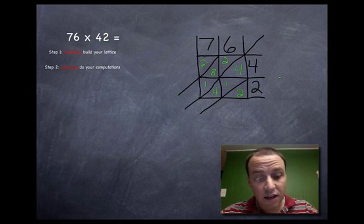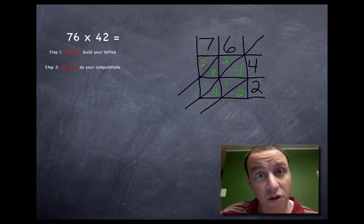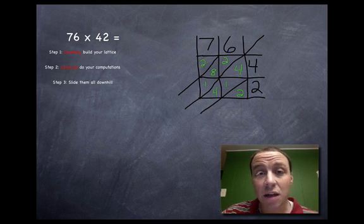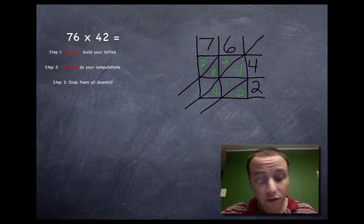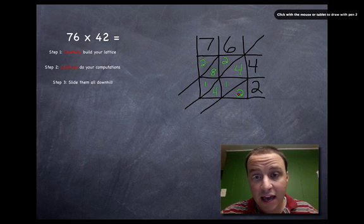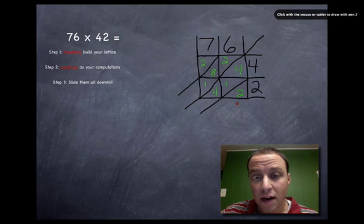Step two is in the books. We only have one more step to go: we slide these numbers downhill. And there's some interesting little nuances to this. Now look, this number here, number two, it's not even on a hill. Nope, it just drops right out the bottom.